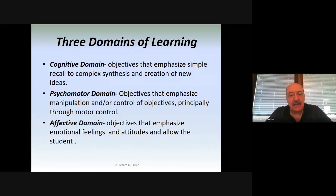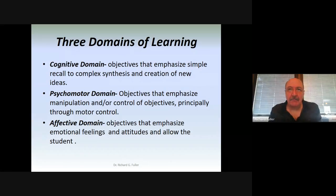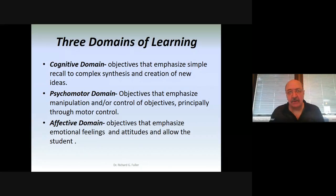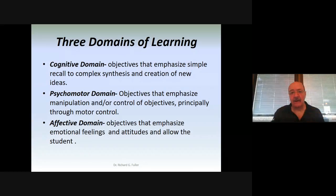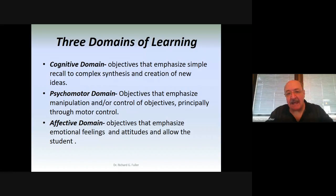Sometime later in the 1960s, Bloom realized the cognitive domain didn't address everything that needed to be learned, so he came up with the psychomotor domain, which is skills-level based. These are objectives that emphasize manipulation and control of objects, principally through motor control. However, I would argue that the psychomotor is not just dealing with physical skills — there are also mental skills. Think of the mental skills students perform: if you're an accounting teacher, students have to know how to move numbers through a series of books, which is a mental skill.